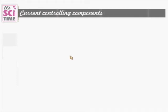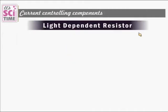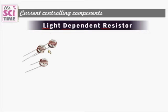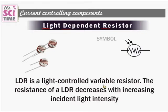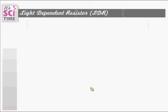The last current controlling component is the Light Dependent Resistor — LDR. It looks like a small head-shaped component and its symbol is a resistor with arrows indicating light. The LDR is a light-controlled variable resistor. Its resistance decreases when light intensity increases — if more light falls on it, its resistance decreases. Watch this video to see the function of the LDR.